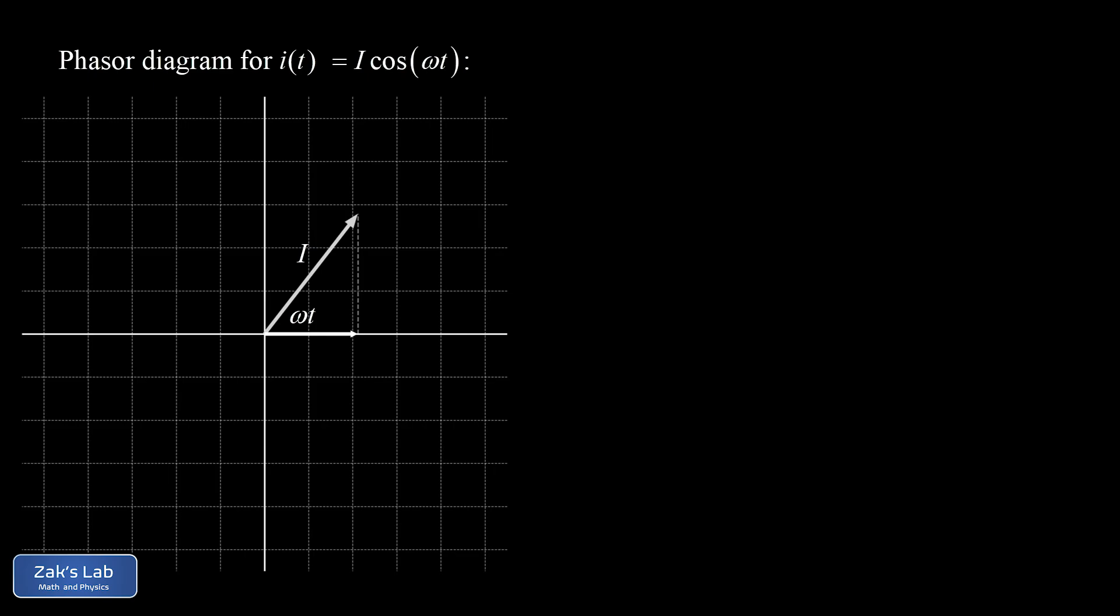So we're going to start with the current phasor. Recall that little i of t is big I cosine omega t. So at some moment in time t, we're going to visualize a vector of length I tilted at an angle of omega t. And we call that vector the current phasor.